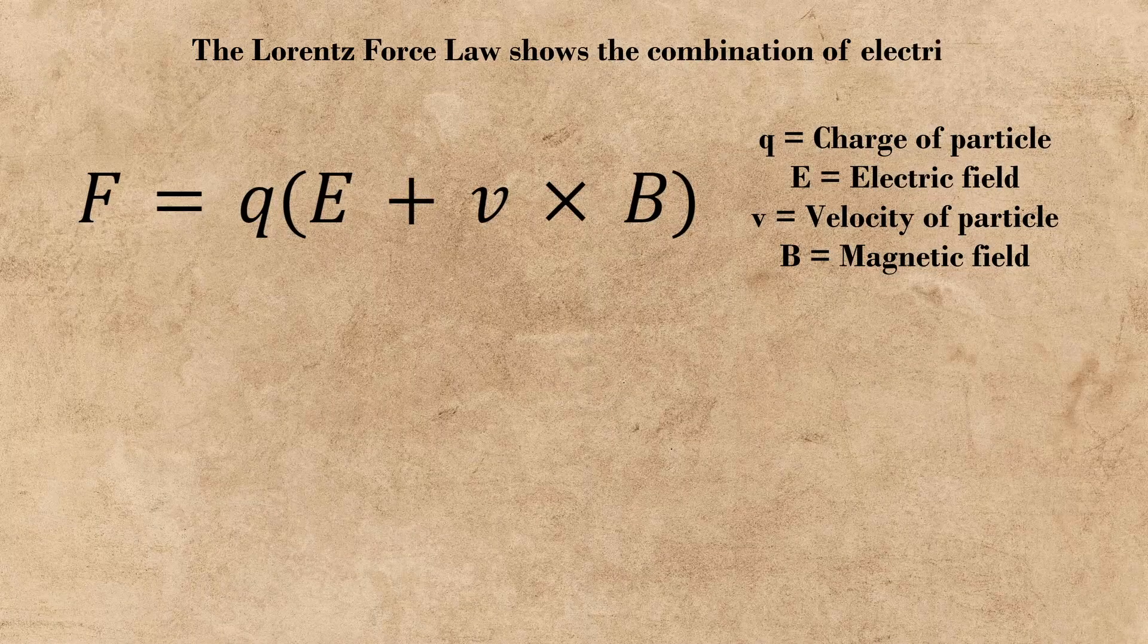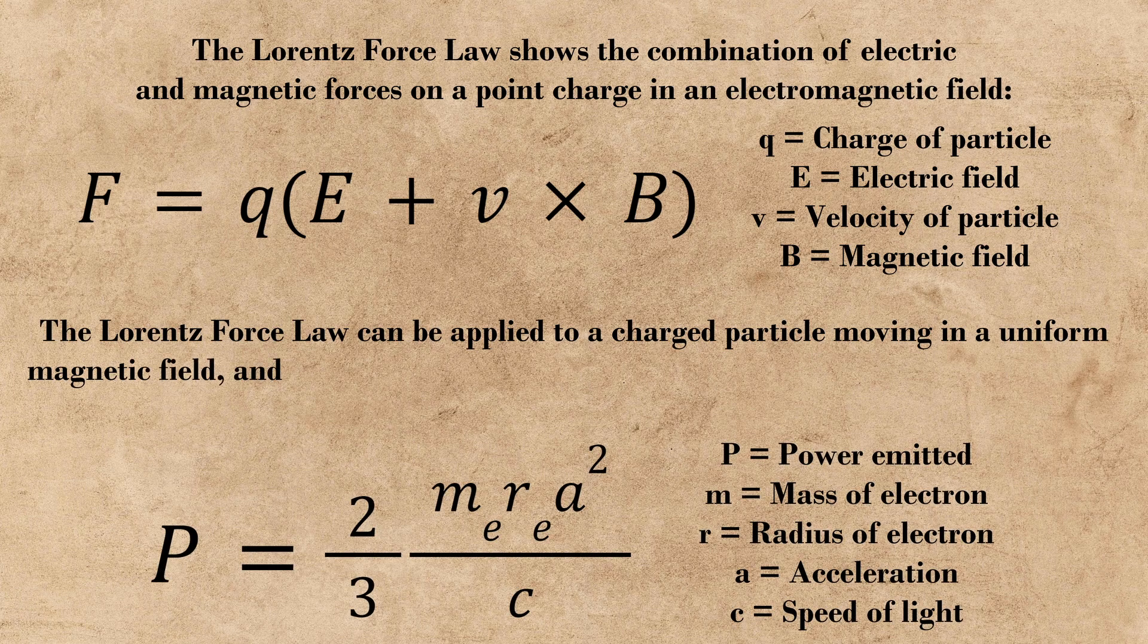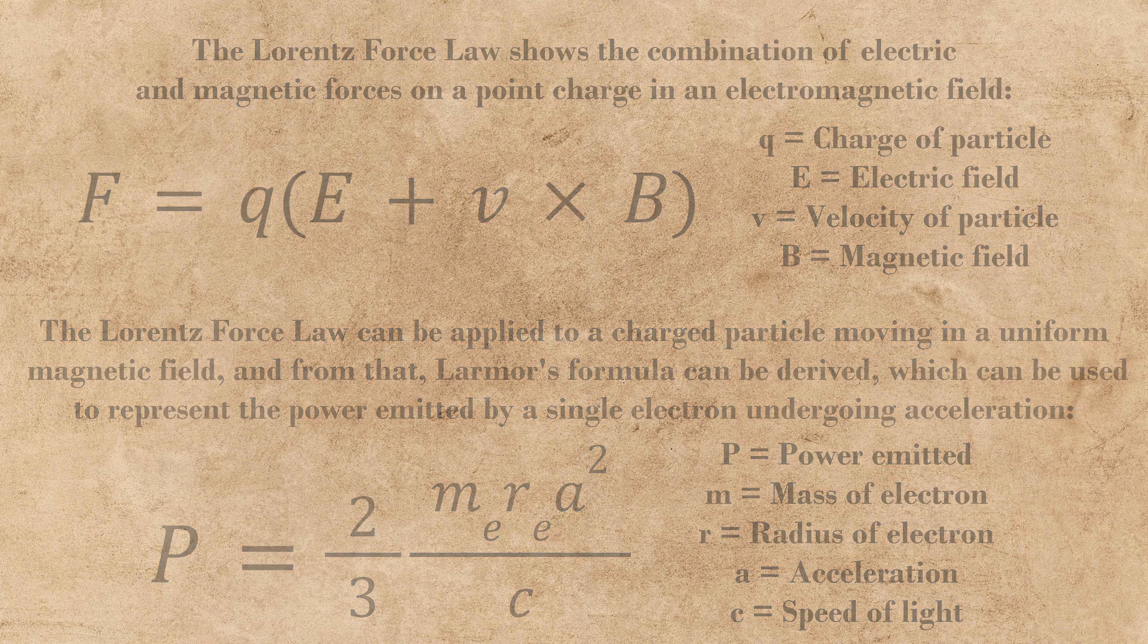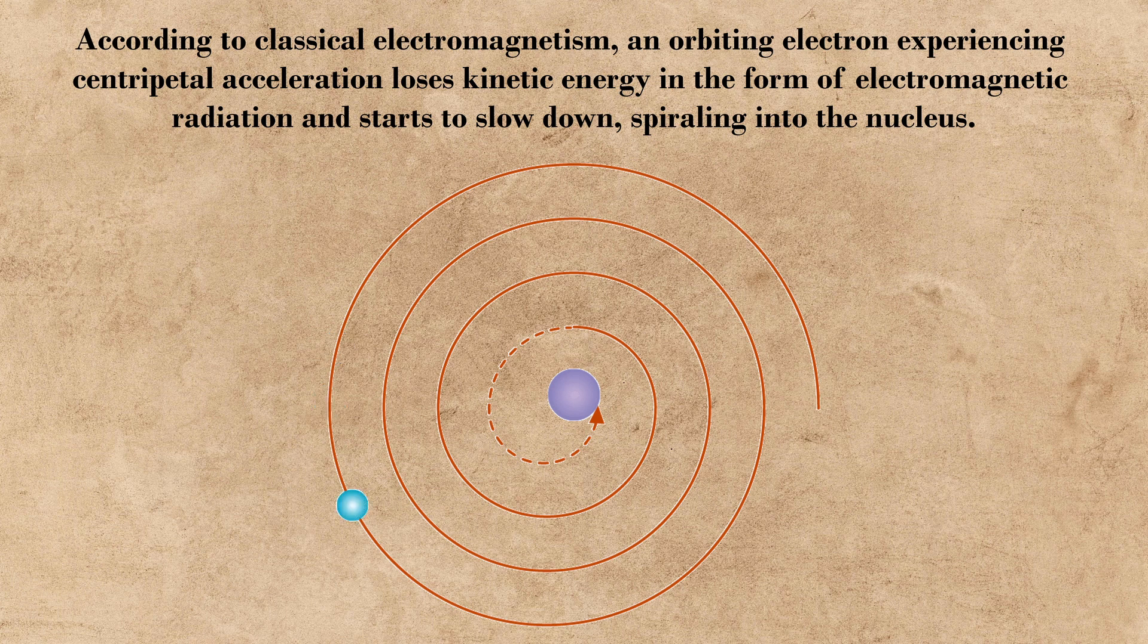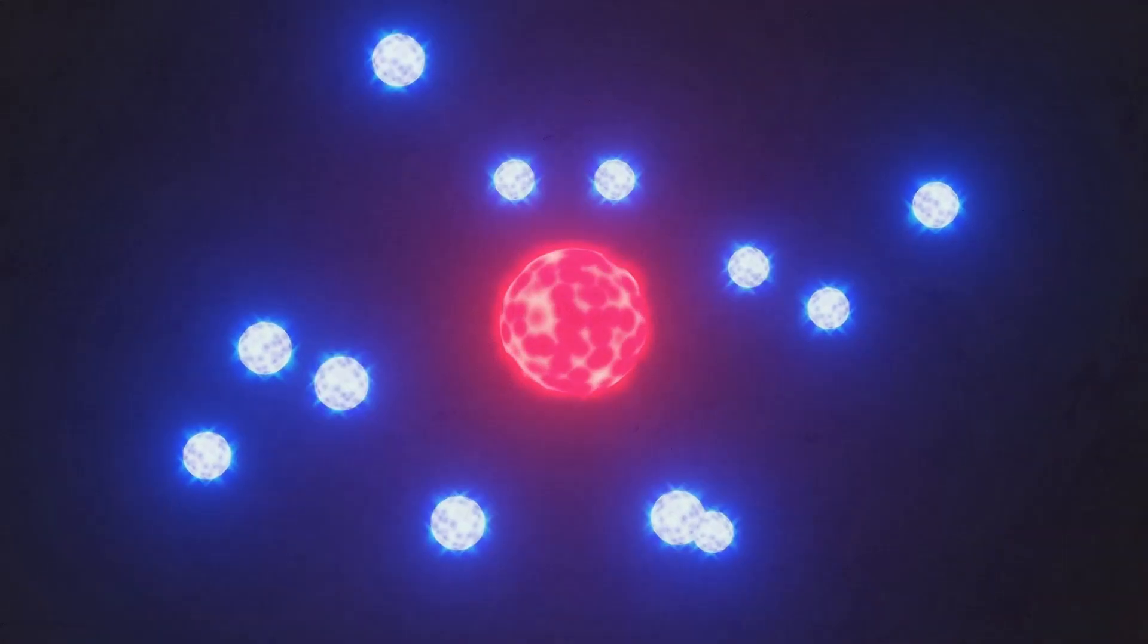According to classical electromagnetism, a charged particle undergoing acceleration has to radiate to conserve its momentum. In the nuclear model, a radiating electron would lose its energy over time, and the effect of this would be that the electron slowly would fall towards the nucleus, eventually colliding with the nucleus and collapsing the atom. Since atoms in this universe are stable, this obviously couldn't be how electrons actually behave.